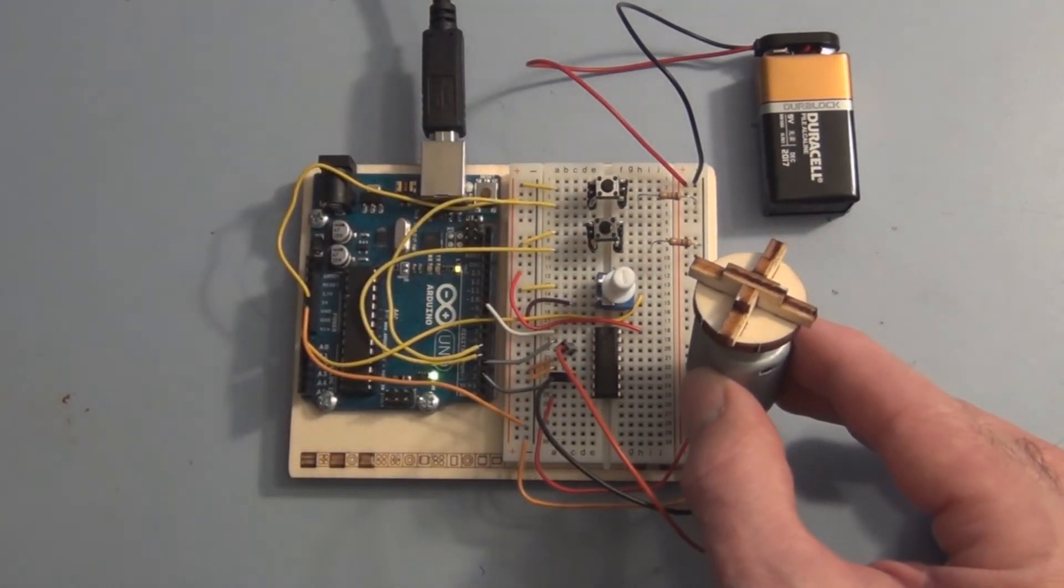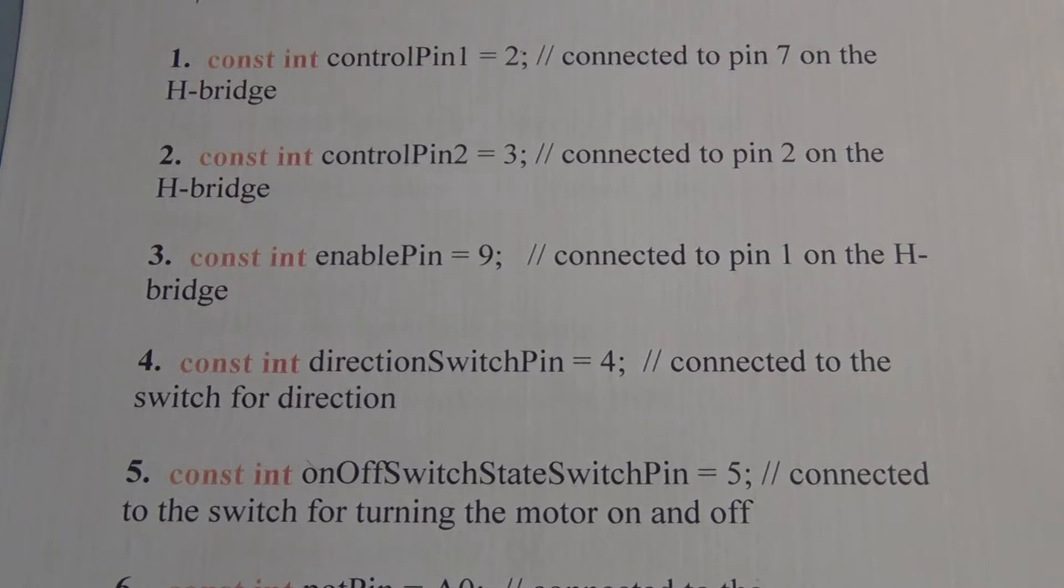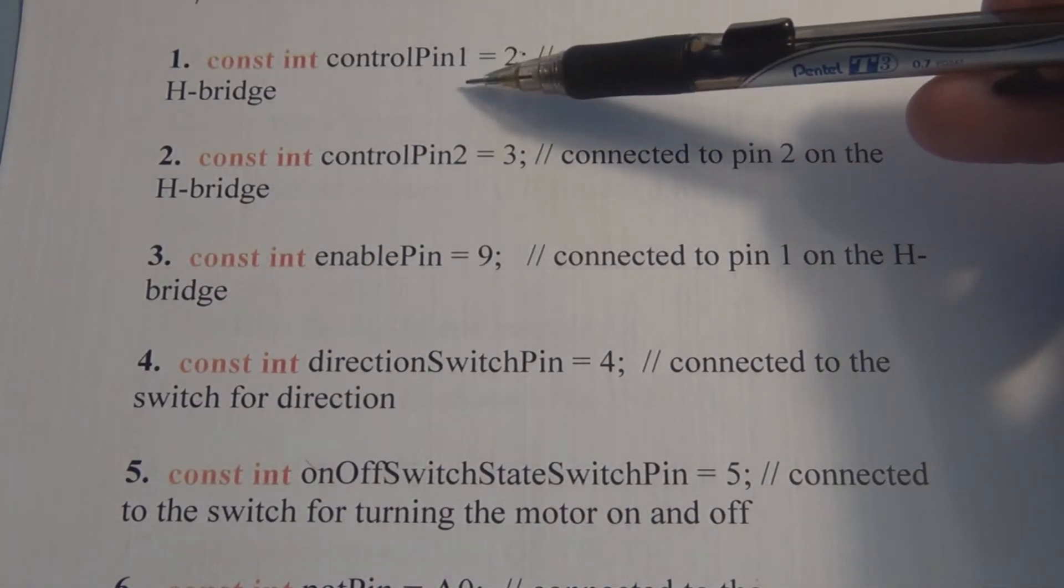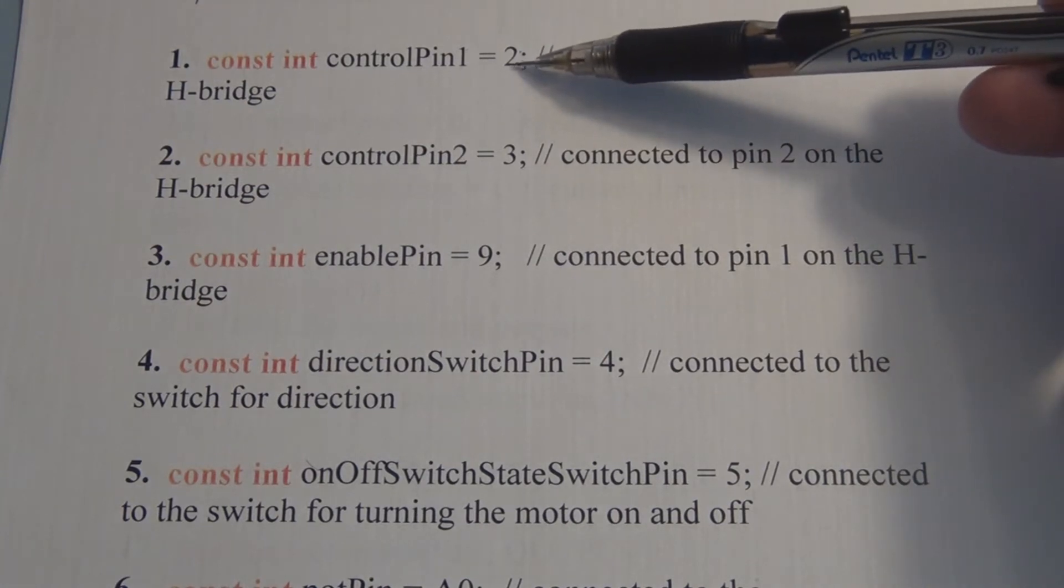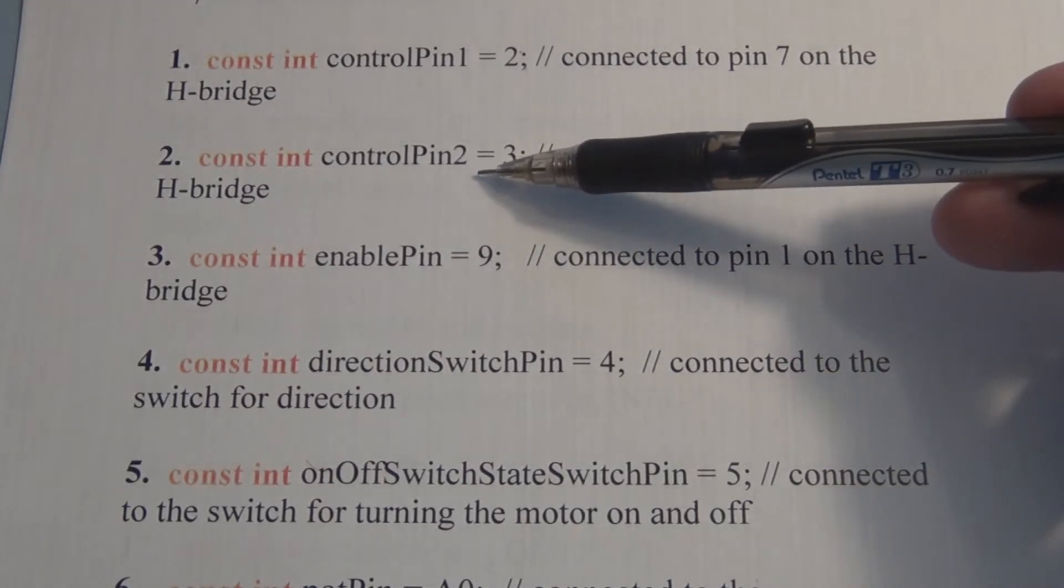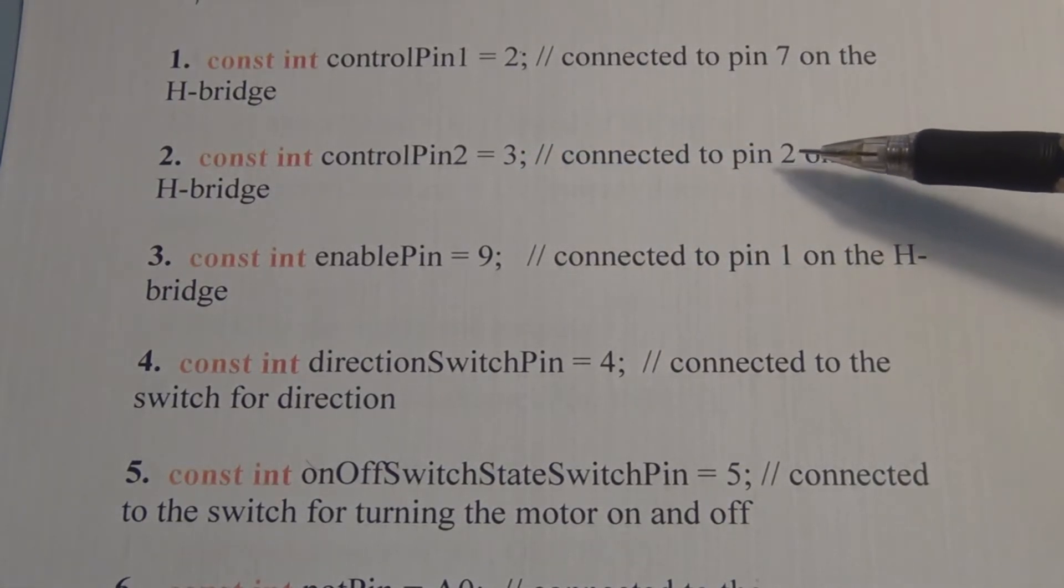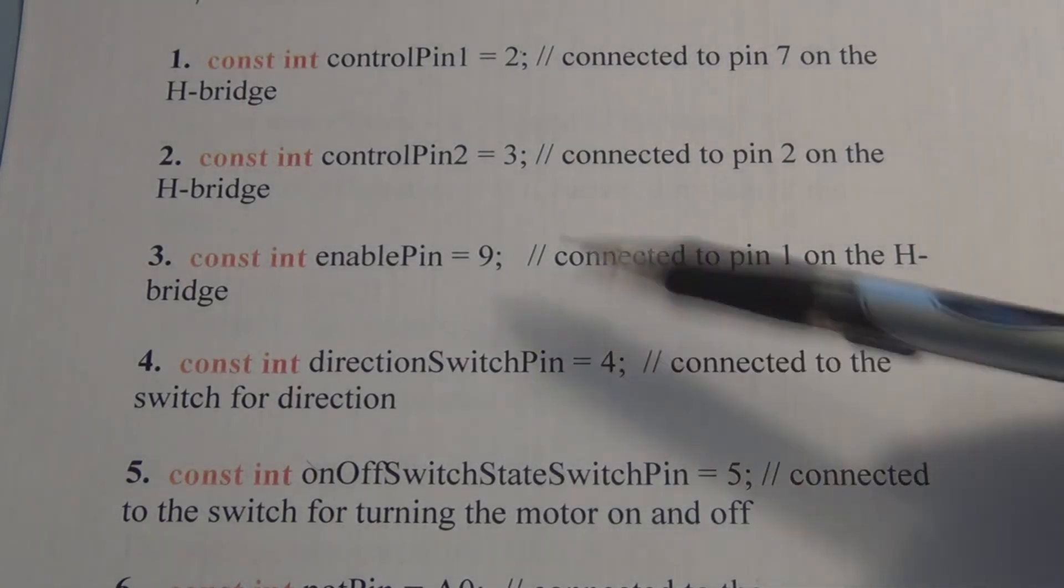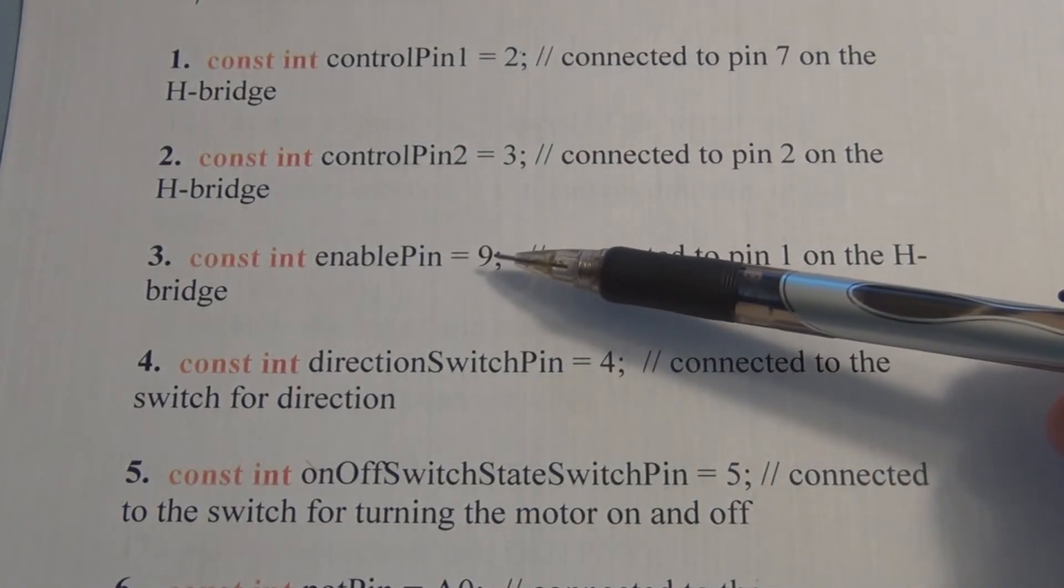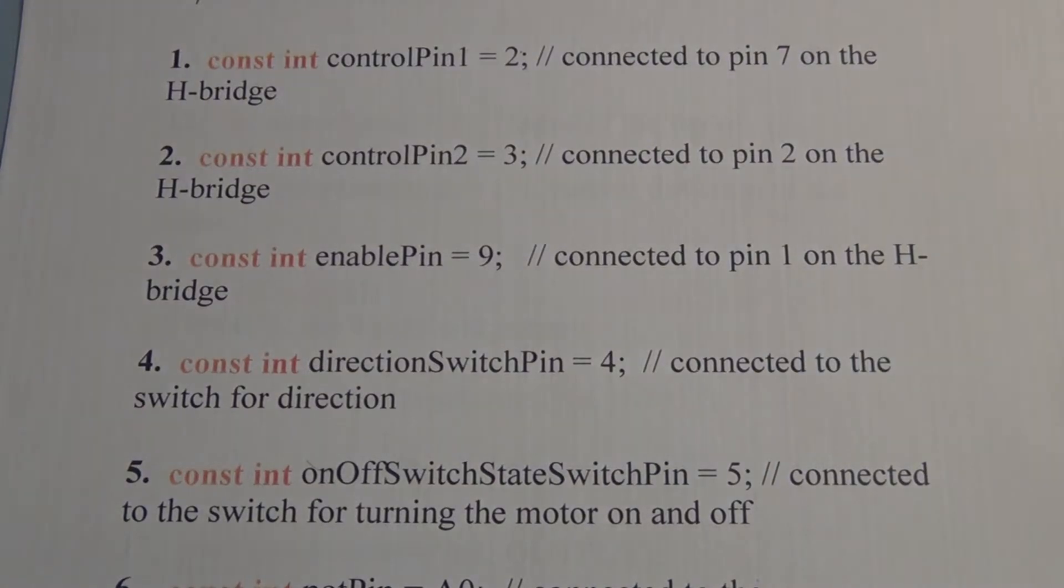So let's take a look at the program and how the program works. Okay, let's go over the program now. There's a lot going on here. First, we have 6 constant integer variables we're going to declare. We've got control pin 1, which is pin 2 on the Arduino and that's connected to pin 7 on the H-bridge. We've got control pin 2 which is pin 3 on the Arduino and that gets connected to pin 2 on the H-bridge. We've got enable pin which is pin 9 on the Arduino and that gets connected to pin 1 on the H-bridge.